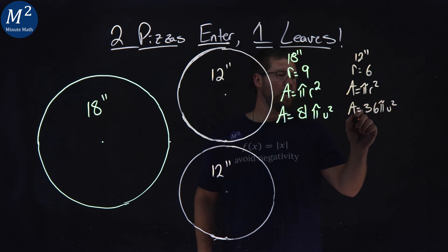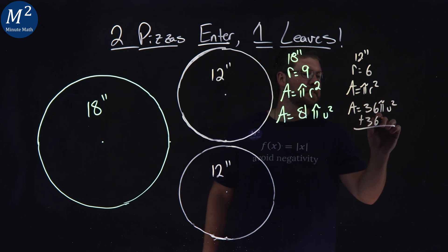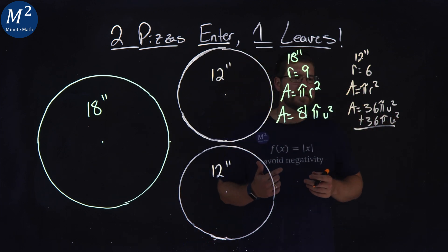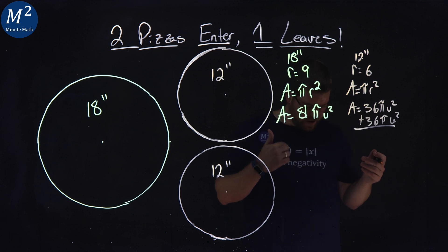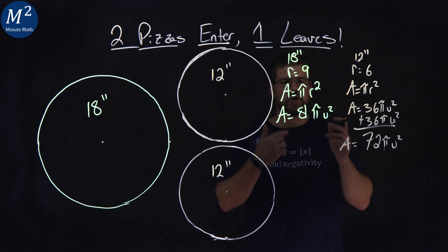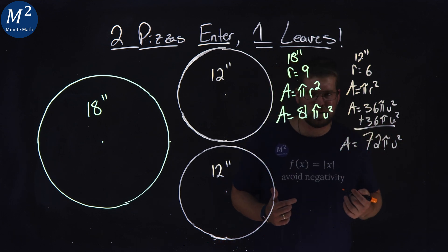But we got two of them. We add another one, 36 pi units squared. So 36 plus 36 comes out to be 72 pi units squared. Our two pizzas are 72 pi units squared.